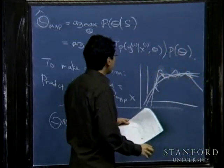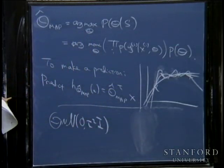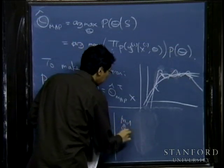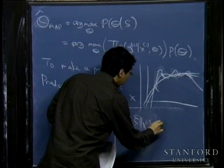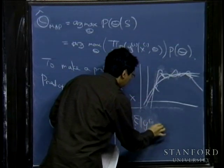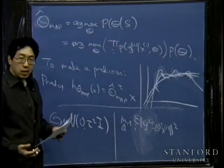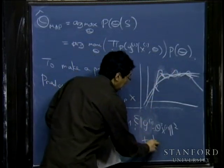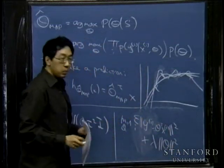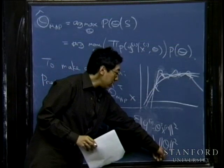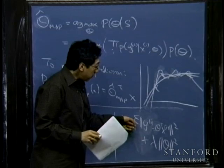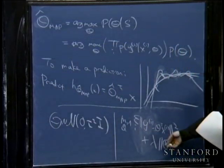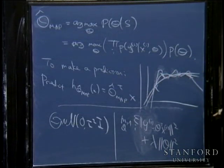One last piece of intuition — you'll get to play with these ideas more in problem set three. Whereas maximum likelihood for linear regression turns out to be minimizing a squared error term, if you add this prior term it turns out that the optimization objective you end up optimizing adds an extra term that penalizes your parameter theta for being large. This ends up being an algorithm very similar to maximum likelihood, except you tend to keep the parameters small. Shrinking the parameters has the effect of keeping the functions you fit smoother and less likely to overfit.